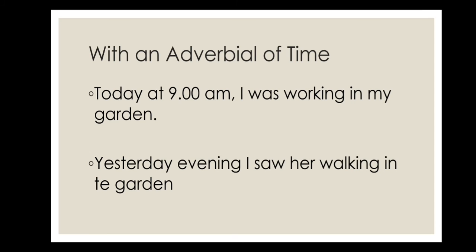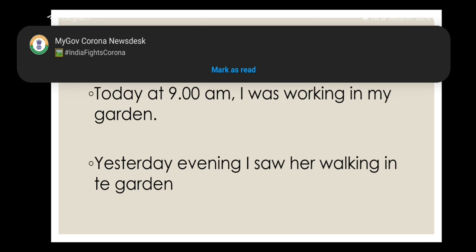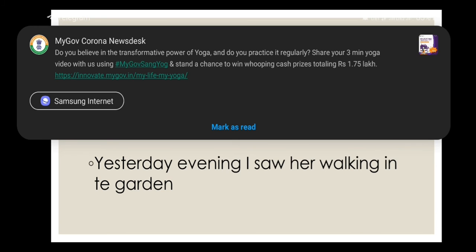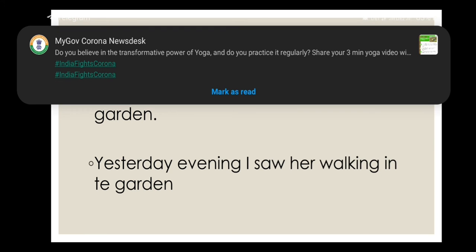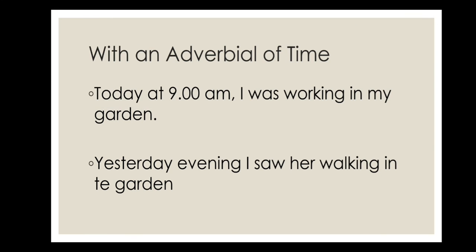Past continuous tense is also used for actions that happened in the past which take an adverbial of time. Like today at 9am I was working in my garden — so 'I was working' is past continuous tense. Yesterday evening I saw her walking in the garden.